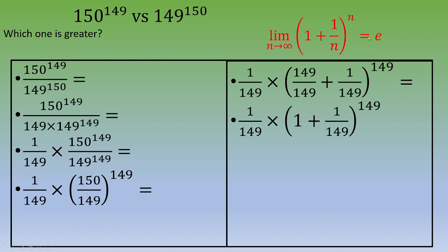E is approximately 2.71. So if we recap, this is e divided by 149, which is approximately 2.71 divided by 149.